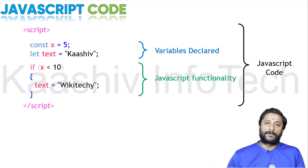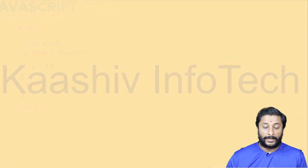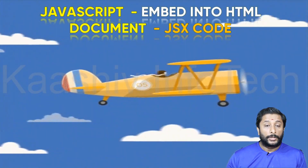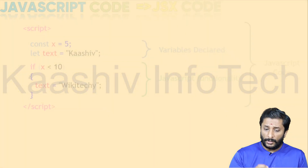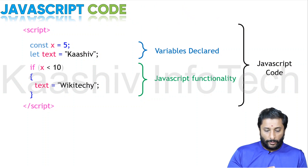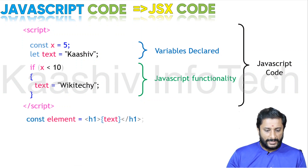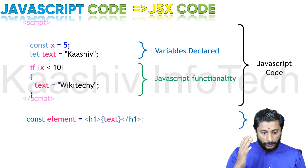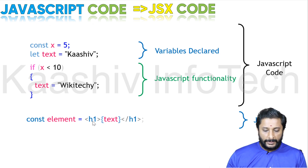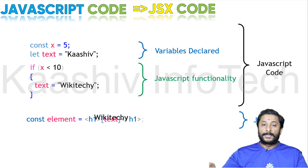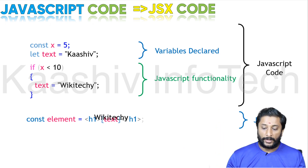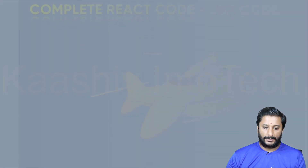I'm going to explain how we are going to embed your JavaScript code with HTML — that is JSX code. You got the JavaScript code, and I need to add HTML. The script tag is removed and here is the h1 tag with HTML, and the JavaScript variable is declared here with curly brackets. This is how it works — the variables will be declared in your curly brackets. This is called JSX code.